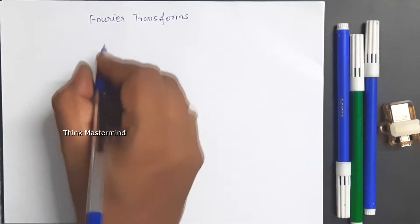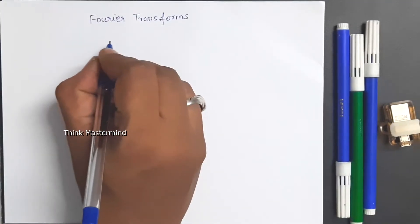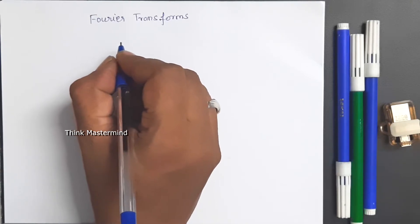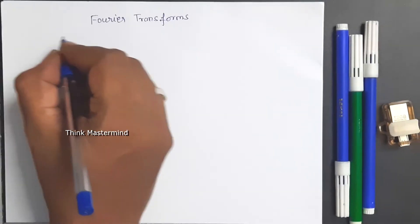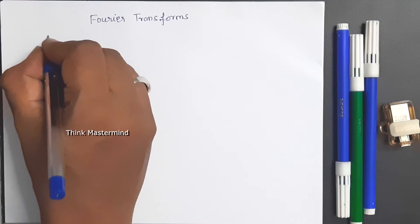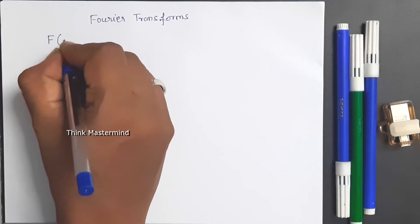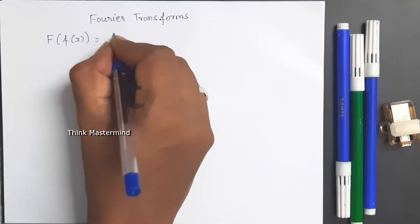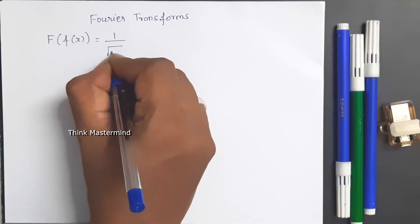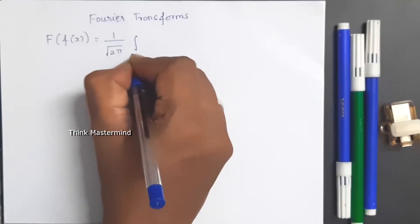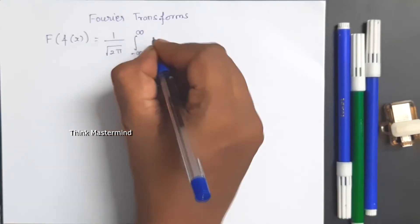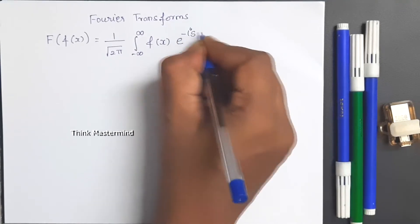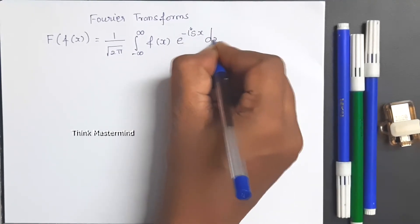Fourier transform is applicable for a non-periodic function. In the previous topic, Fourier series was applicable for a periodic function. Let us define what is Fourier transform. The Fourier transform of f(x), denoted F(s), is equal to 1 over √(2π) times the integral from minus infinity to plus infinity of f(x) · e^(−isx) dx.